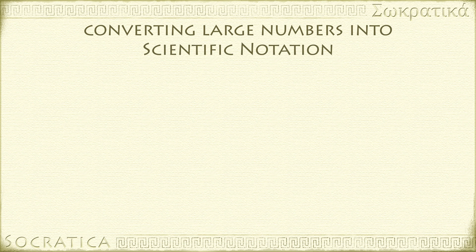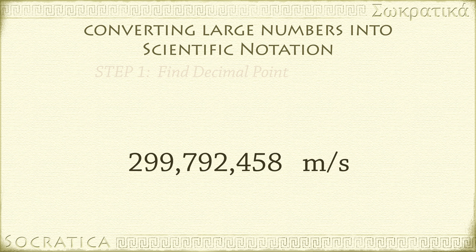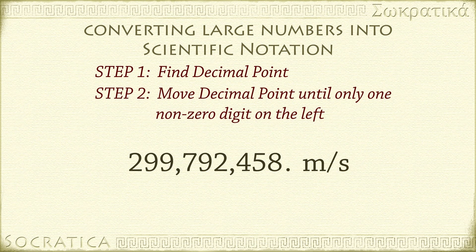How do we convert these very long numbers into the much shorter scientific notation? Let's start with the speed of light example. The first step is to find where the decimal point is. When a number is written as an integer like this, there is an understood decimal at the end. So let's go ahead and put that in. The next step is to move the decimal point until there's only one non-zero digit to the left of the decimal. Each time you move a decimal point, you are changing the number by a factor of 10. So we need to keep track of the number of moves. Let's count.